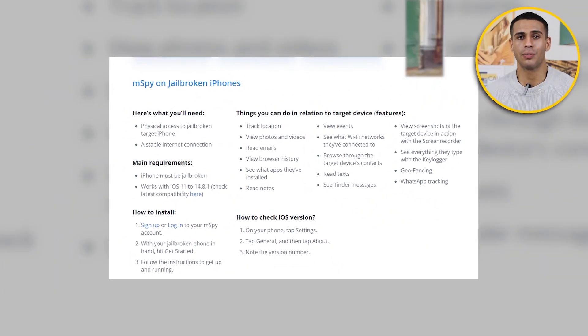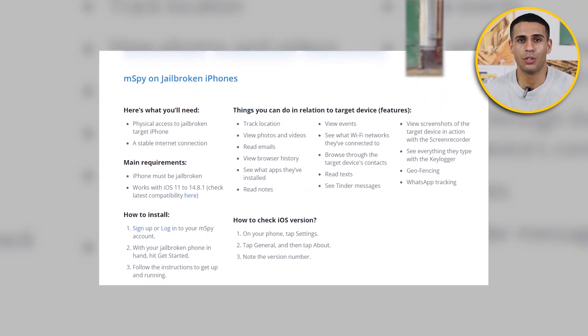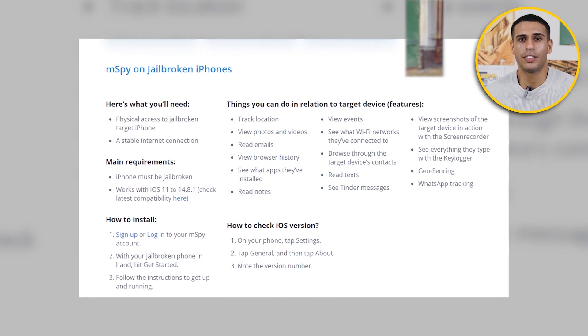Step 5: Enter your payment details using a debit or credit card, and then click Submit Order. Once mSpy is downloaded, you can start tracking the targeted device. Step 6: One thing to note is that if you want to track the targeted device in real-time, you might have to jailbreak the device. The requirements to jailbreak a device will be displayed on the mSpy website, which you can see during the account creation process.